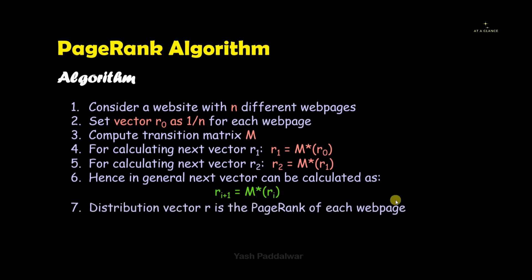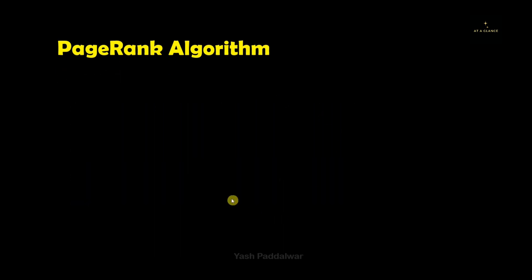Once the number of iterations are accomplished, we will get the final vector r, which contains the final page ranks of every single web page. The web page with the highest page rank will be of higher relevance. This is how we calculate the most relevant web pages using the PageRank algorithm. Now we are going to solve a very interesting example using this algorithm.